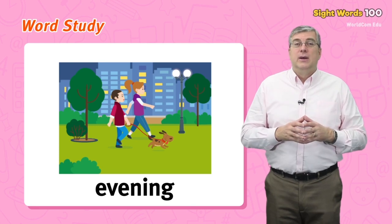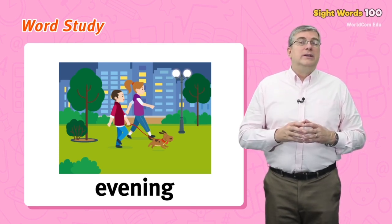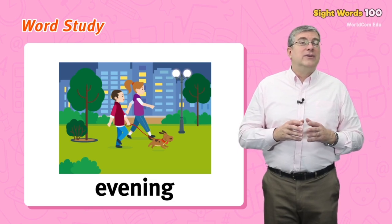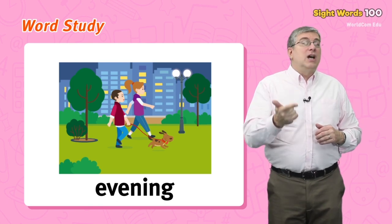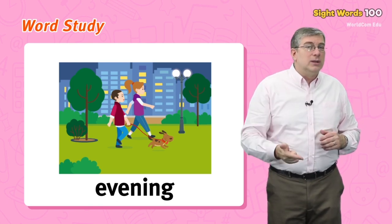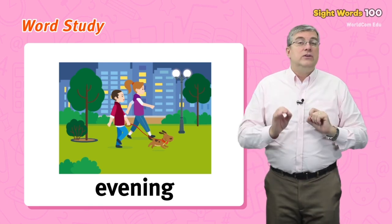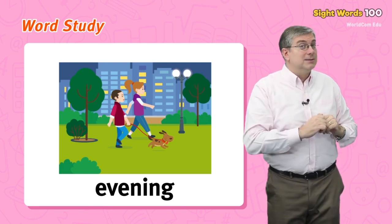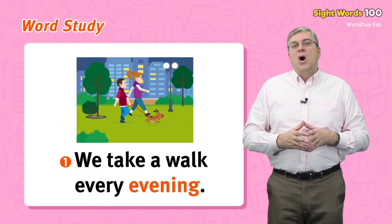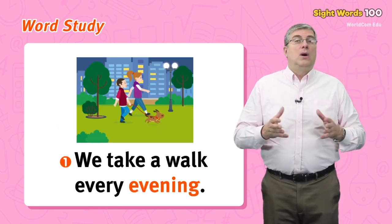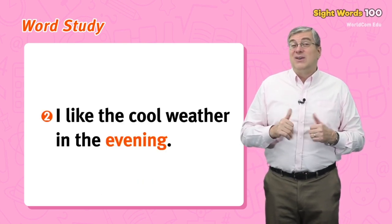Next we have evening. This word describes a part of the day. You wake up in the morning and go to school. You study until the afternoon. In the evening, you have dinner, do your homework, and go to bed. For example, we take a walk every evening, or I like the cool weather in the evening.